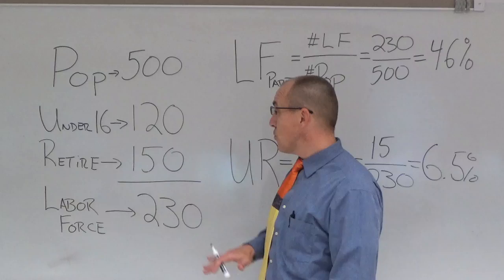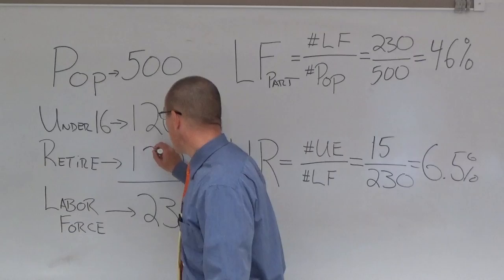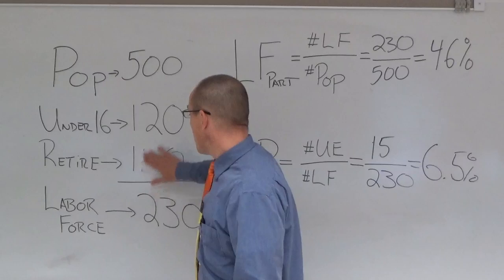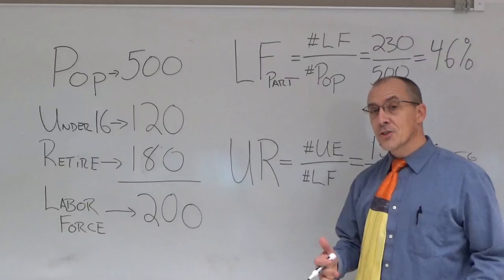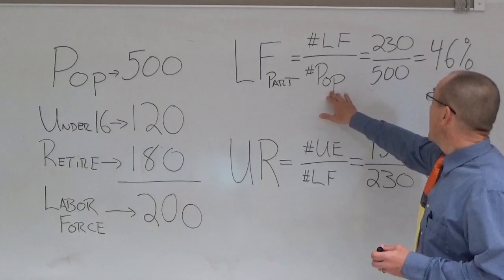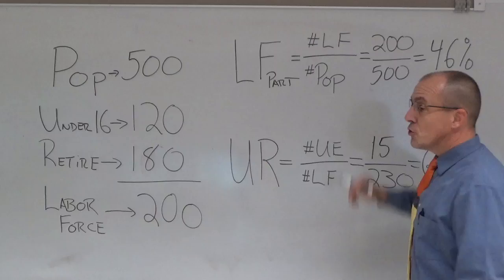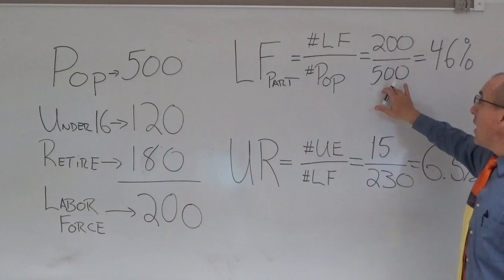Let's suppose that in this society the number of retirees goes up. We have a society which originally had 150 retirees. Let's suppose 30 more people retire. If 30 more people retire, this brings us up to 180. Then my labor force now goes down to 200 people. The decline in labor force actually can have a big impact on the unemployment rate as we shall see.